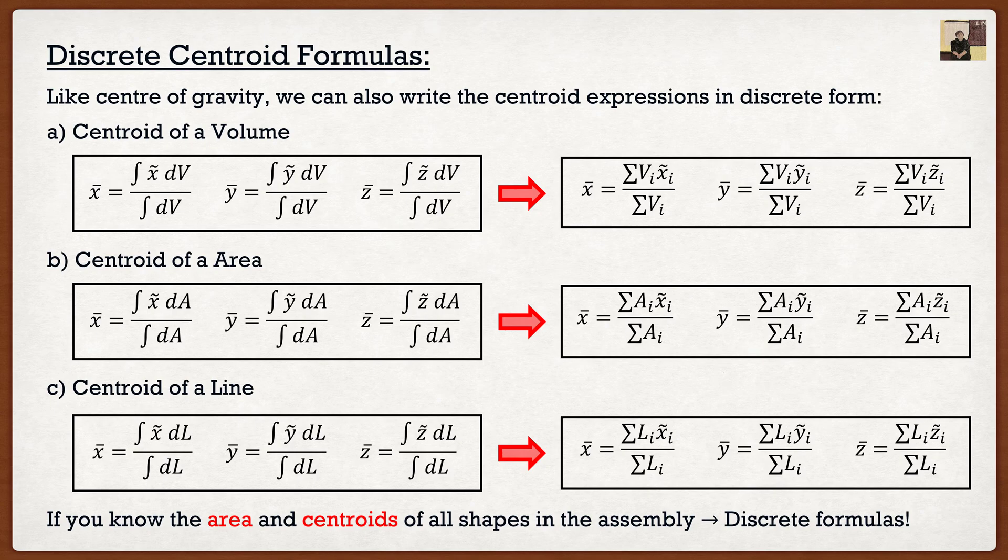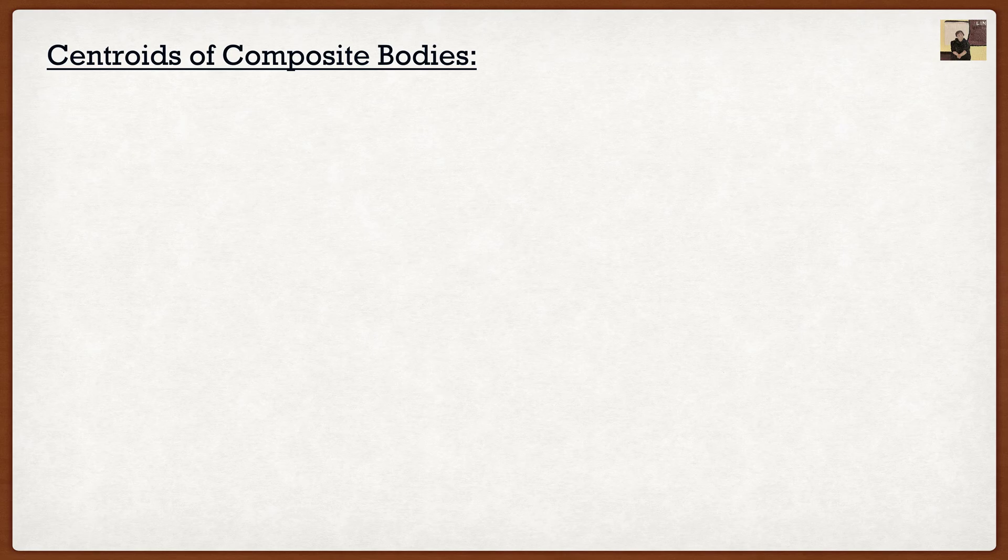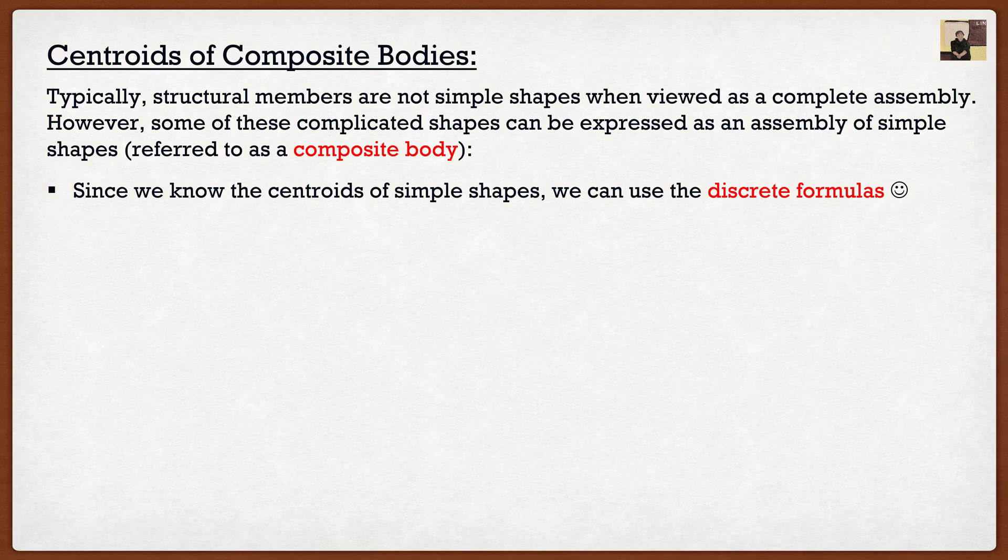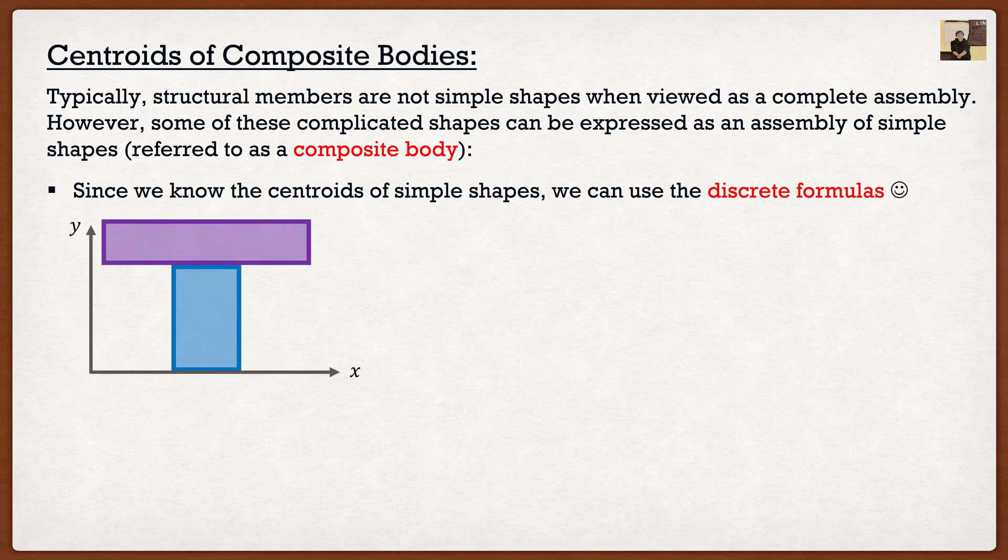Well, more often than not in exams, we will have something called composite bodies, where we have a complex looking body, but it's actually just a combination of smaller shapes. And these shapes are actually simple shapes. So again, that would be a composite body. And since we know the centroids of all these simple shapes, we can use discrete formulas. So the best example would be the one that we covered in the last video, which is what we'd call a T-beam.